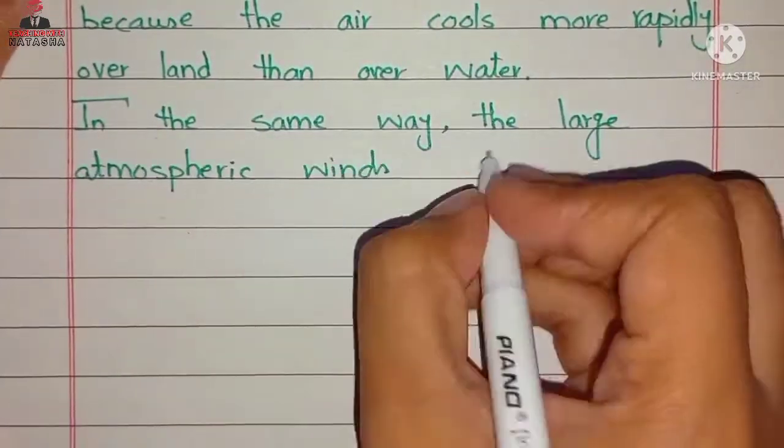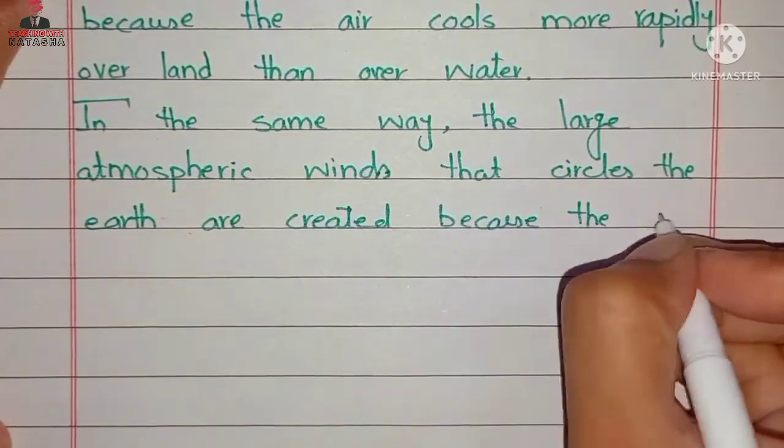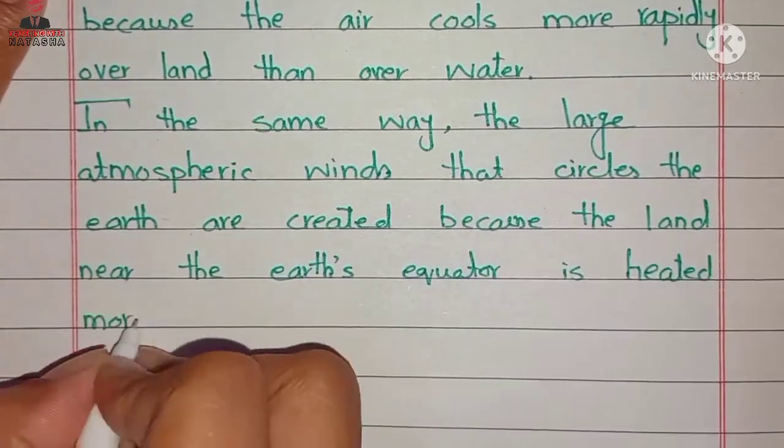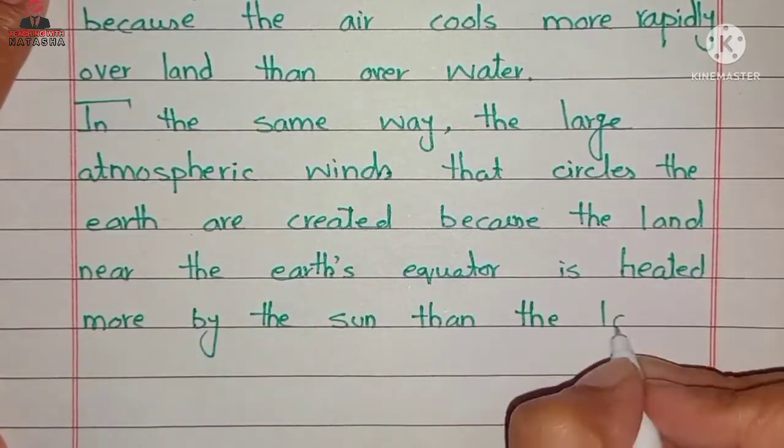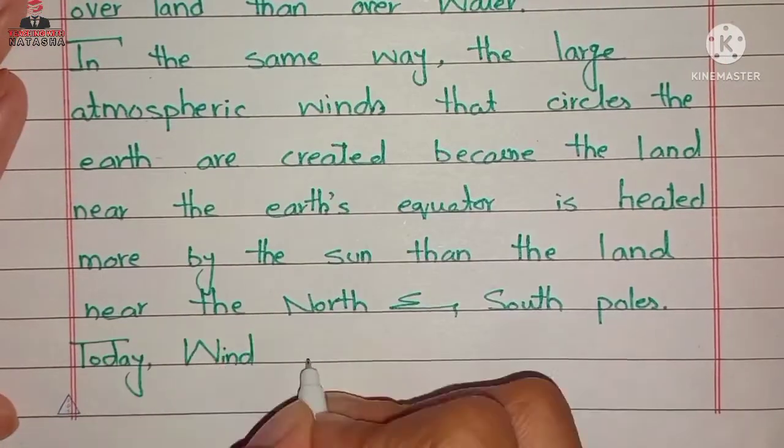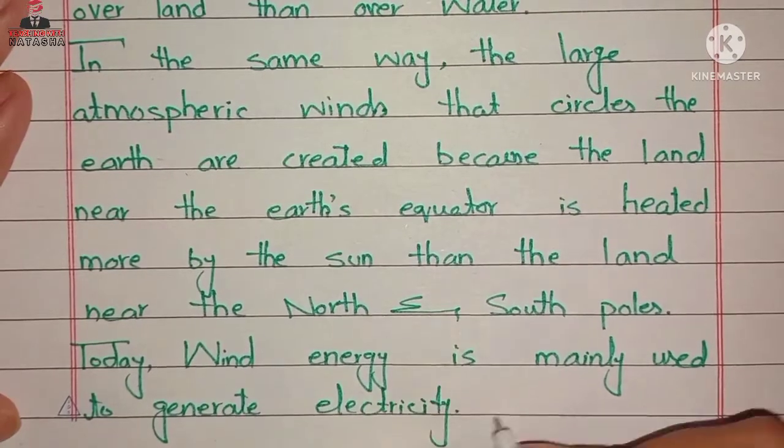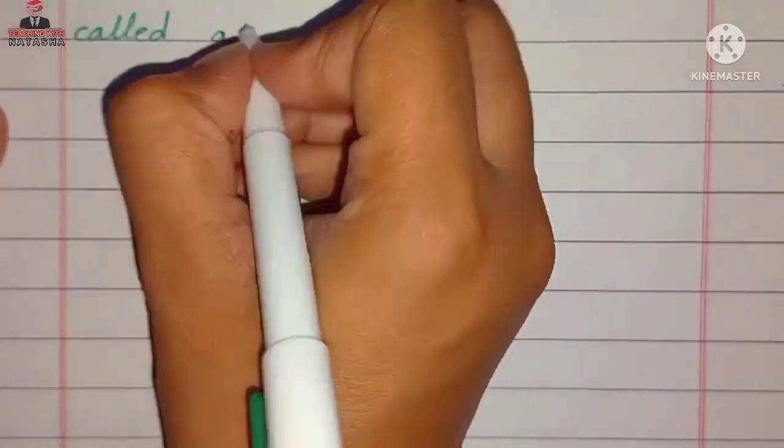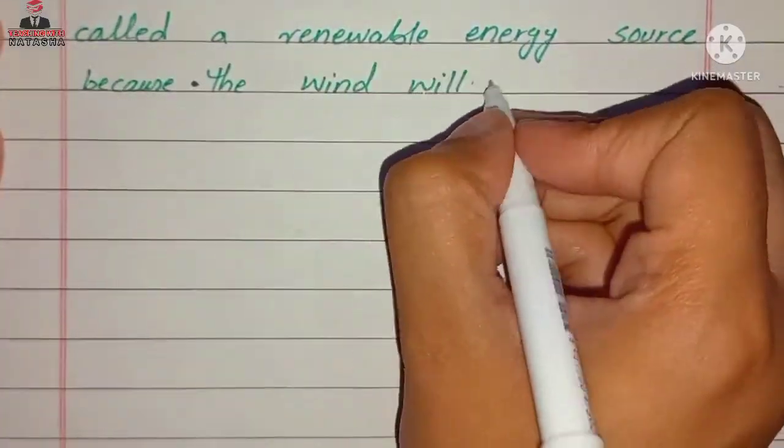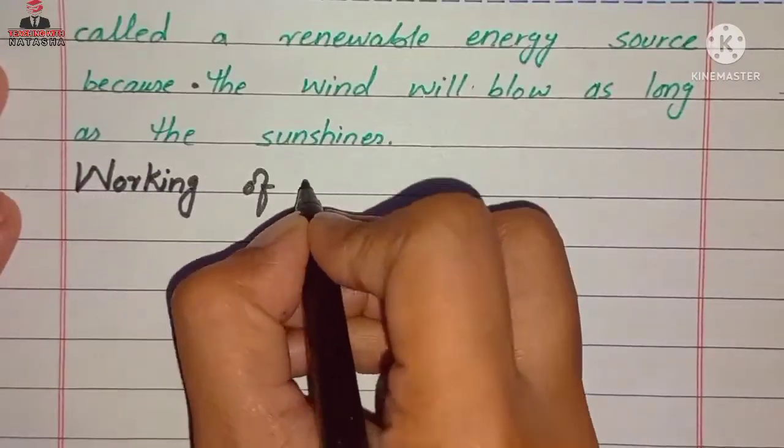In the same way, the large atmospheric winds that circle the earth are created because the land near the earth's equator is heated more by the sun than the land near the north and south poles. Today, wind energy is mainly used to generate electricity. Wind is called a renewable energy source because the wind will blow as long as the sun shines.